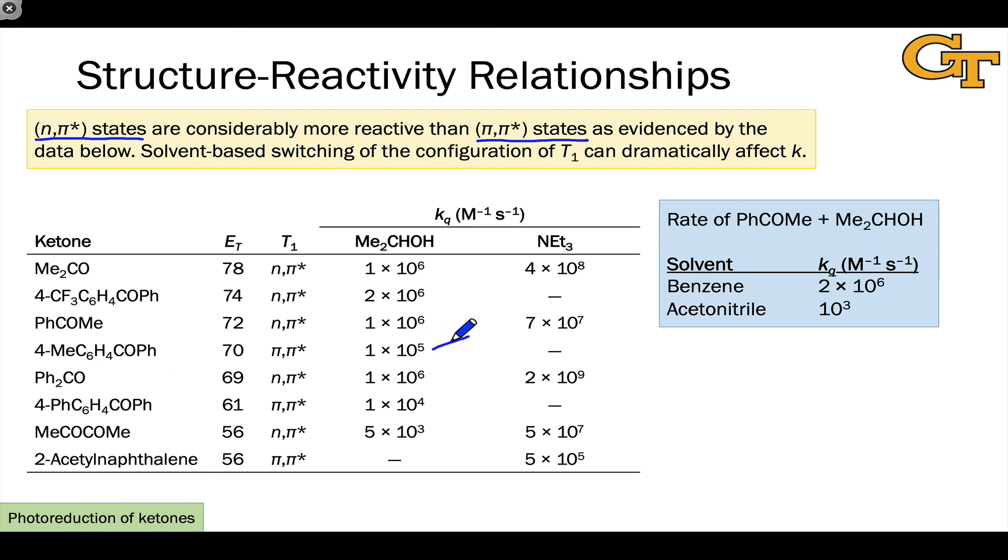We can see this dependence of the reaction rate on the triplet energy. As that triplet energy goes down, the hydrogen transfer process becomes less exothermic and the reaction rate slows. Related to the first point about the configuration of the triplet state, this can be modified, played with, tinkered with by changing the solvents.